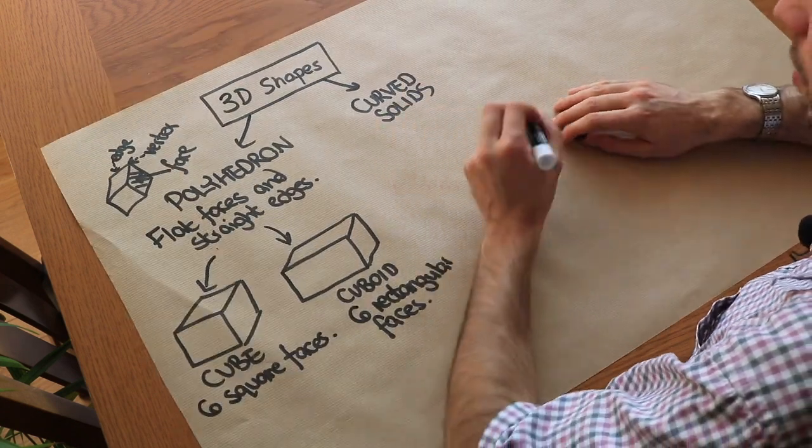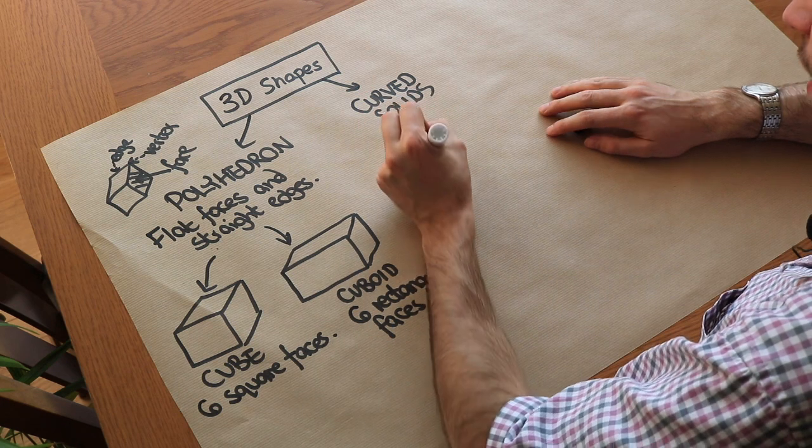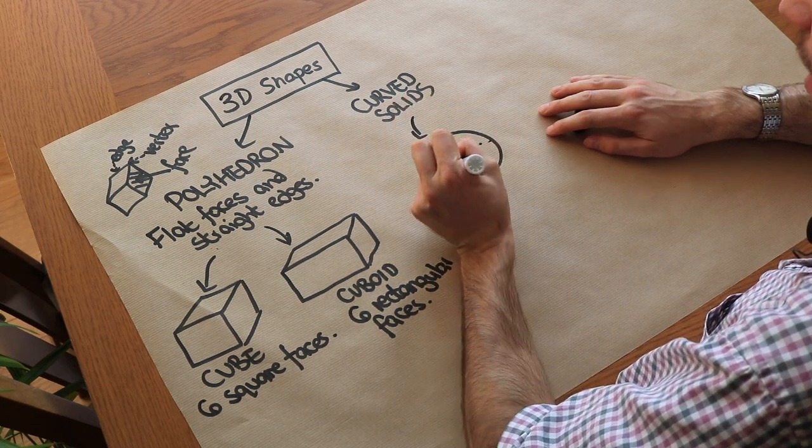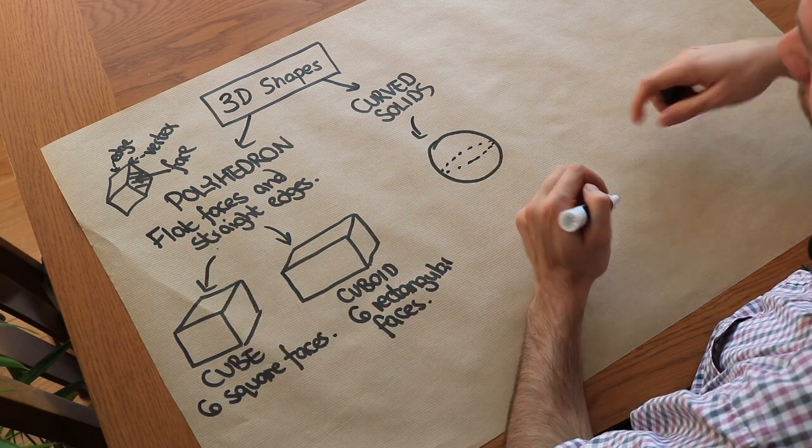And let's think of some of the curved solids as well. Well we've got a sphere. A sphere is basically the 3D version of a circle. Like our earth is an example of a sphere.